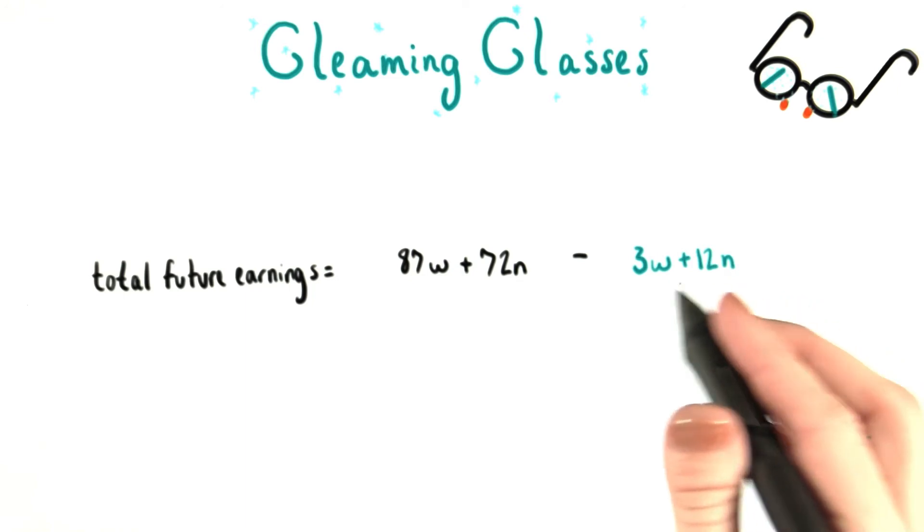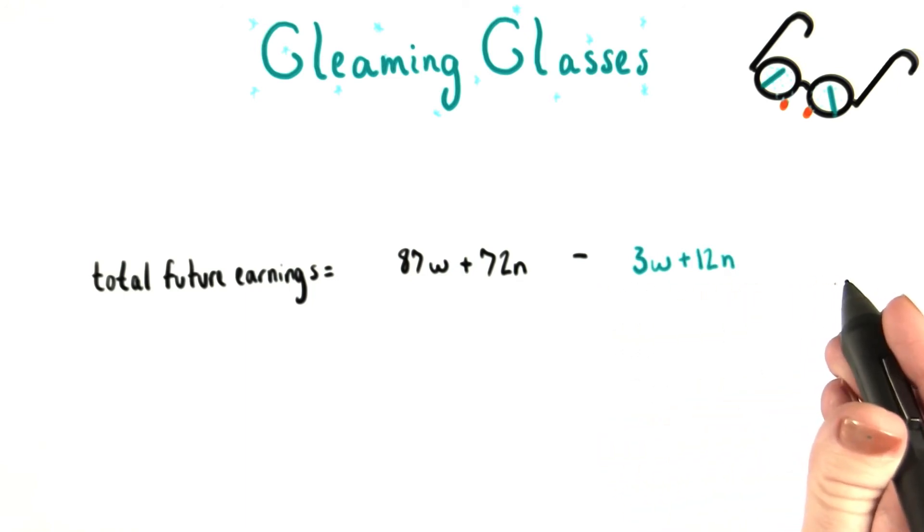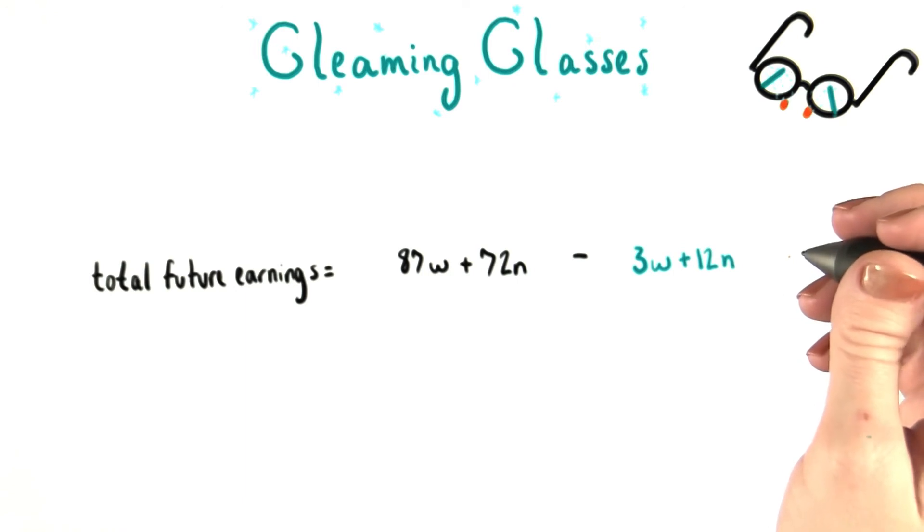So this is what the equation looks like if we just replace that word, money from cancelled orders, with the mathematical expression we knew that it's equal to.